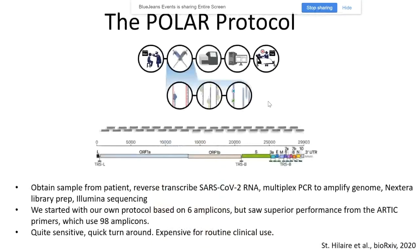So what did we do? We used an adaptation of the published polar protocol. Basically, we obtained samples from patients. We used RT-PCR to reverse transcribe SARS-CoV-2 RNA genomes into double-stranded DNA. We used PCR to amplify, we created Nextera library preps, and we used the Illumina platform to sequence those preps. Initially we started with our own protocol based on six large amplicons, but we found far superior performance using the Arctic primer sets, which are 98 amplicons that are closely overlapped. This technique is quite sensitive — we could go from sample to genome in about 24 hours. It's a bit expensive for routine clinical use, but works very well in our group.